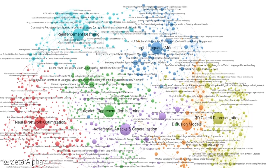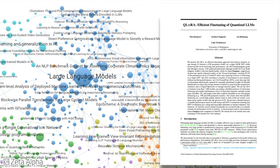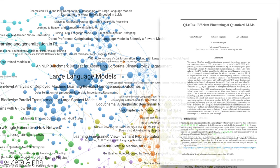We start with large language models and the QLORA paper, which introduces a quantized training method that reduces memory usage and allows for fine-tuning of a 65 billion parameter model on a single GPU, achieving comparable performance to ChatGPT on the Vicuna benchmark.